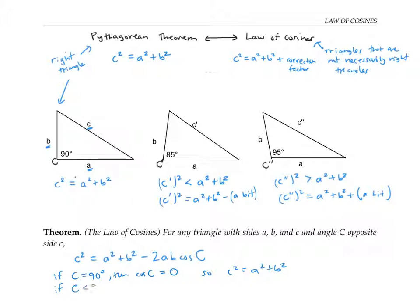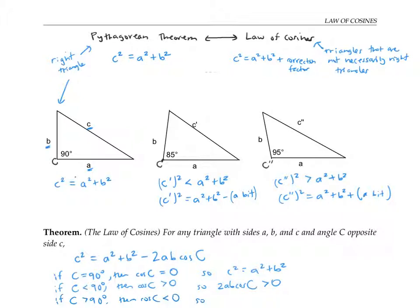If angle C is less than 90 degrees, then from the unit circle we know that cosine of C is positive. So two ab cosine C is a positive number, and we'll be subtracting a little bit from our a squared plus b squared, just like we saw in the picture. Finally, if angle C is bigger than 90 degrees, then we can see from the unit circle that cosine of C is negative. So two ab cosine C is going to be less than zero, and we're subtracting a negative number, which means we're actually adding a little bit, just like we saw in the third picture.